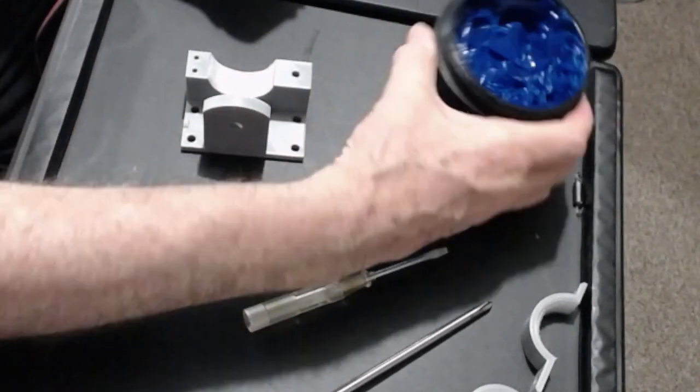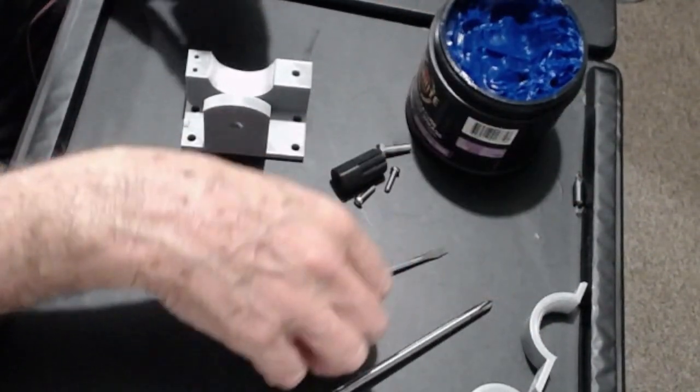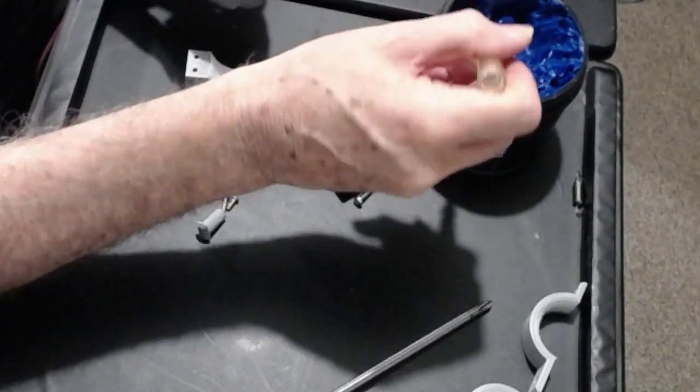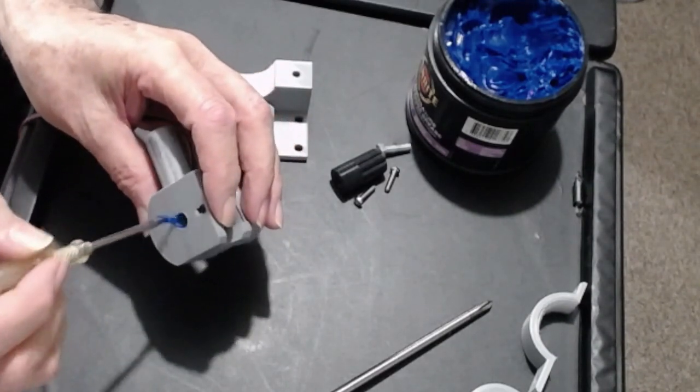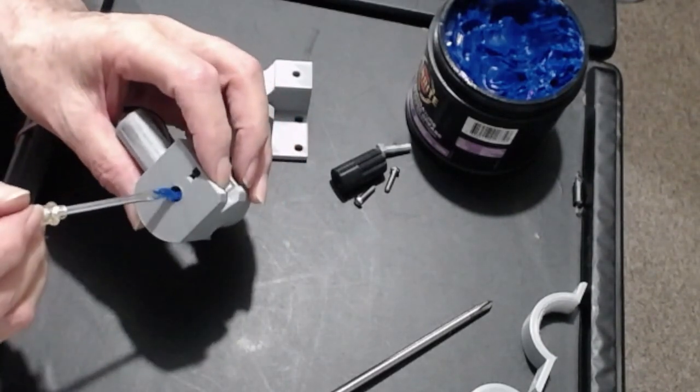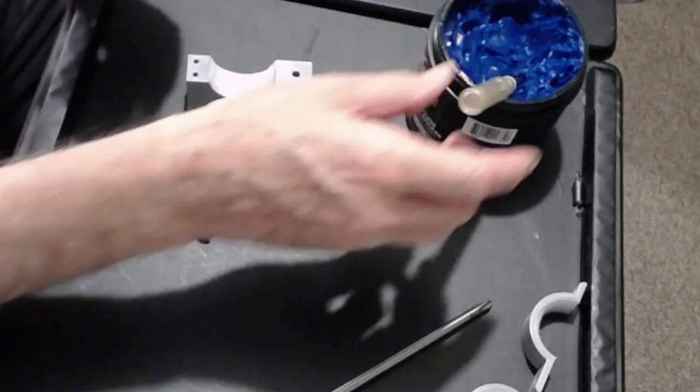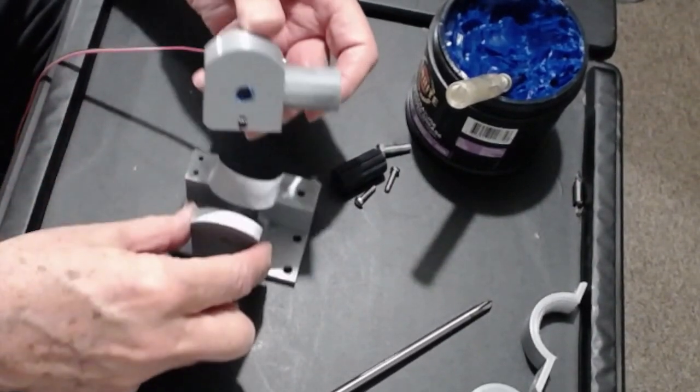The first thing we do is take a little bit of grease—this is just a wheel bearing grease, nothing fancy—and put a little bit of grease, not a lot but just a little bit into the socket there of that mounting point. I've got too much there, but just a little bit.